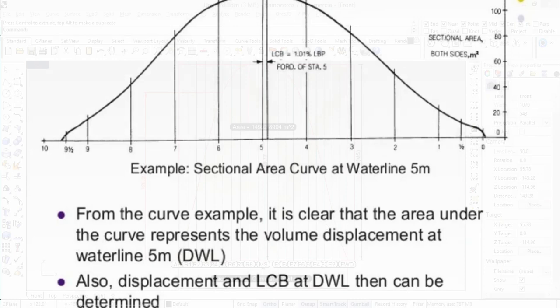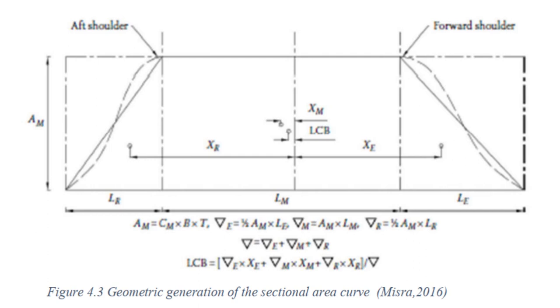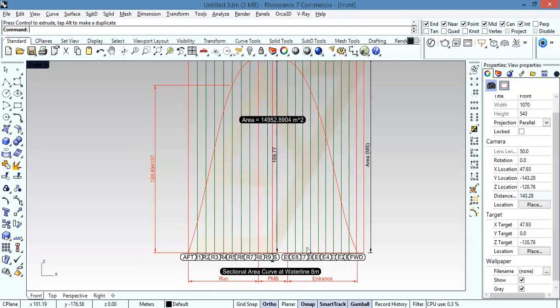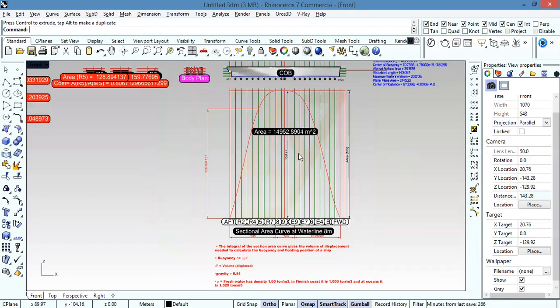The curve is extended over the ship's length, which is divided into three lengths: the entrance length, the length of run, and the length of the parallel middle body. The parallel middle body corresponds to the part of the ship's length with constant sectional area. The entrance is at the bow, the run is at the stern, and the parallel middle body is in the middle.